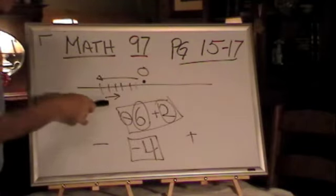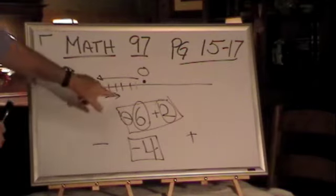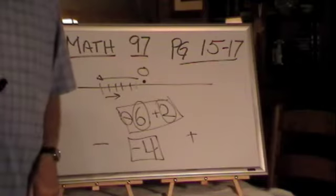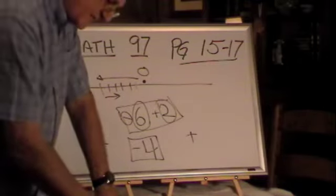Forget the sign, the sign doesn't matter. Six take away 2 is 4. But you keep the sign of which one? That whole paragraph teaches you to keep that sign, the negative. Negative 4. And sure enough, that's exactly what happened. You came down 6, you went back a positive 2, you're still negative at negative 4. Pause that and make sure you pick up that point.